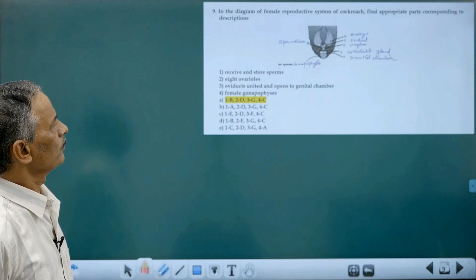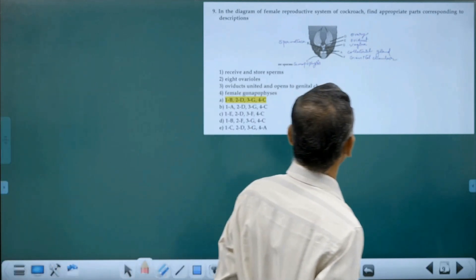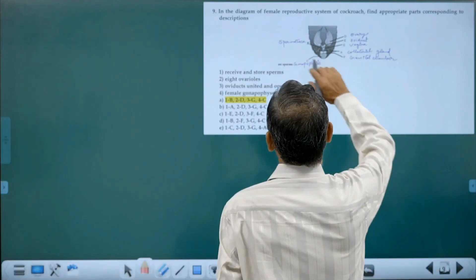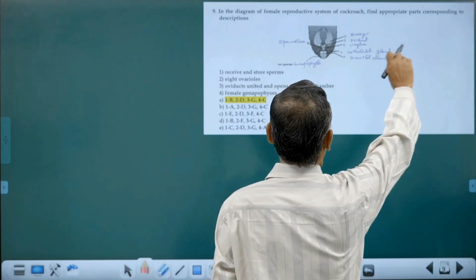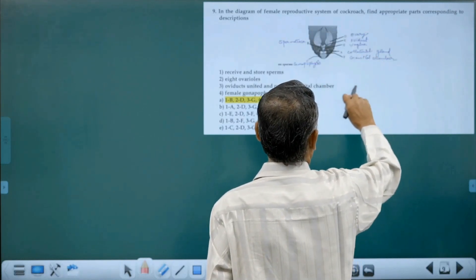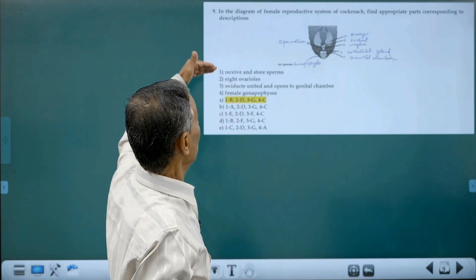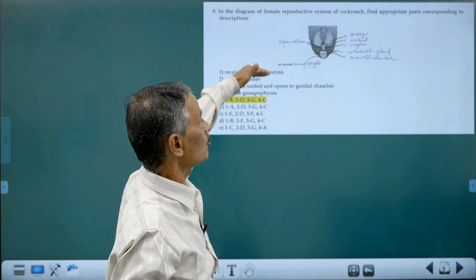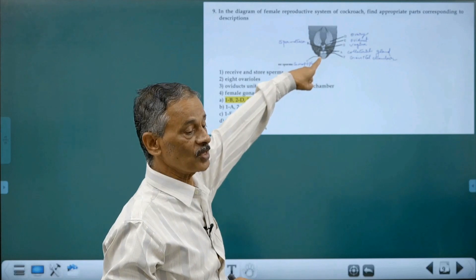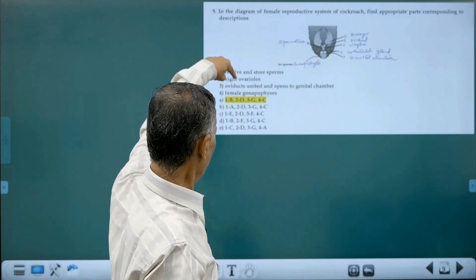Again, a diagram question. There are parts labeled. Now go through the options. Which receives and stores sperm? This is the reproductive system of a female, and in females...